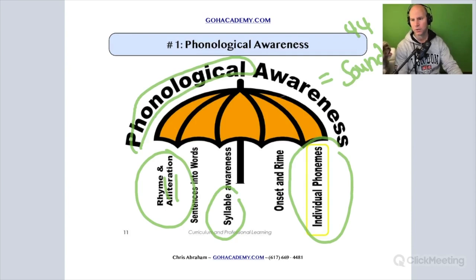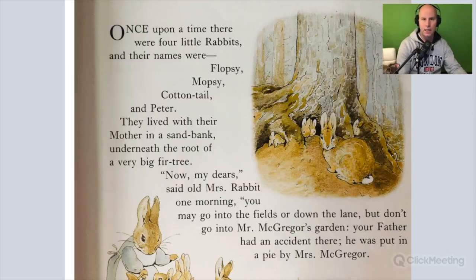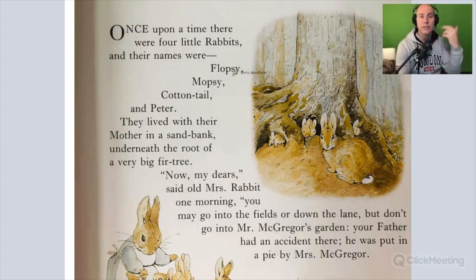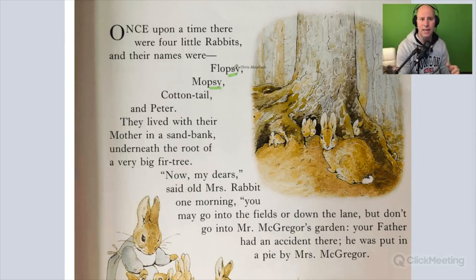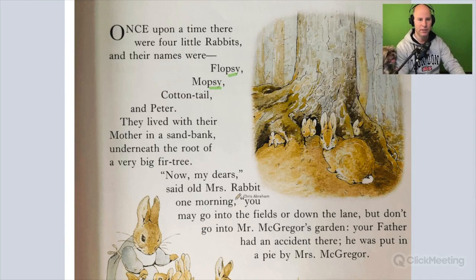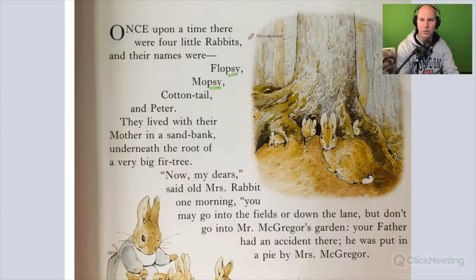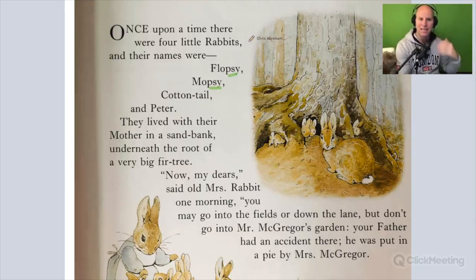If I was reading this to my daughter and we said Flopsy and Mopsy, hopefully she's hearing that they rhyme — on a basic level, she hears that these words have a similar ending. That's basic phonological awareness. Alliteration involves words with a similar beginning sound — like 'Peter Piper picked a peck.' A child hearing that these sounds have similarities in beginning or ending sounds is developing basic phonological awareness.